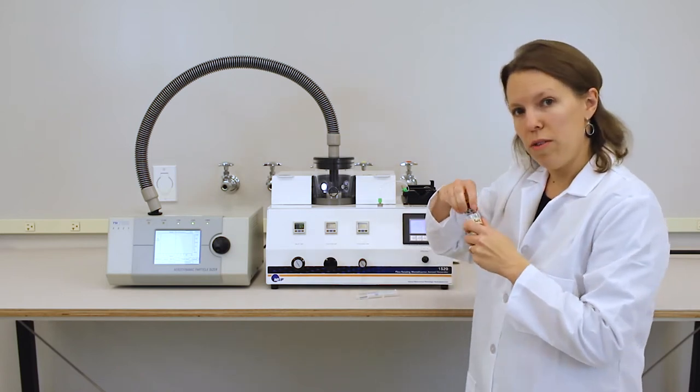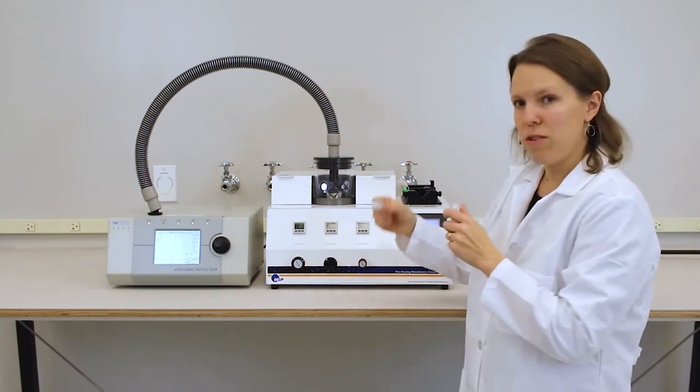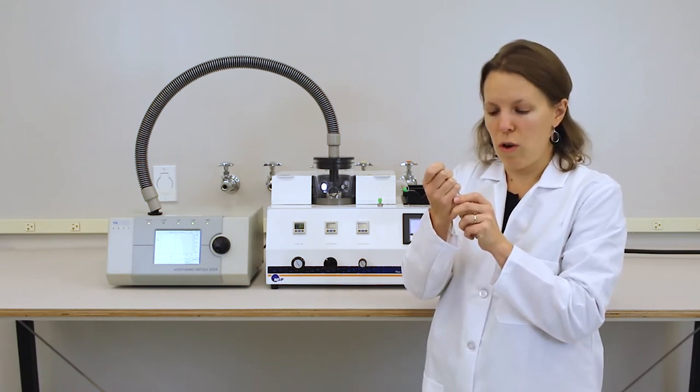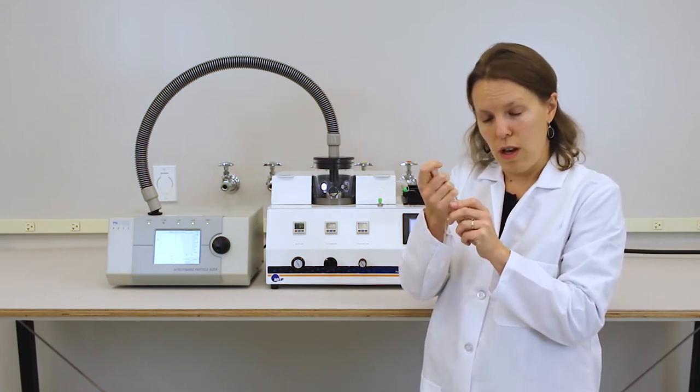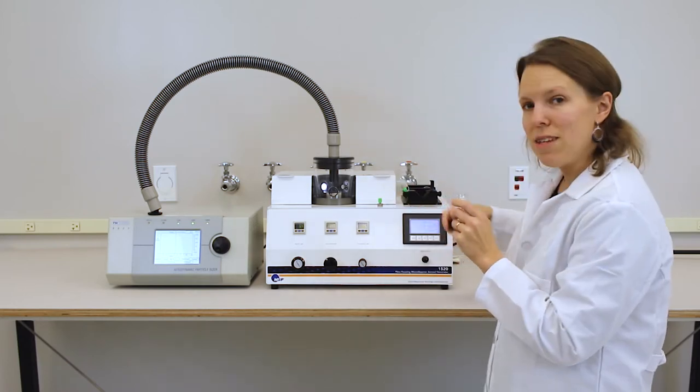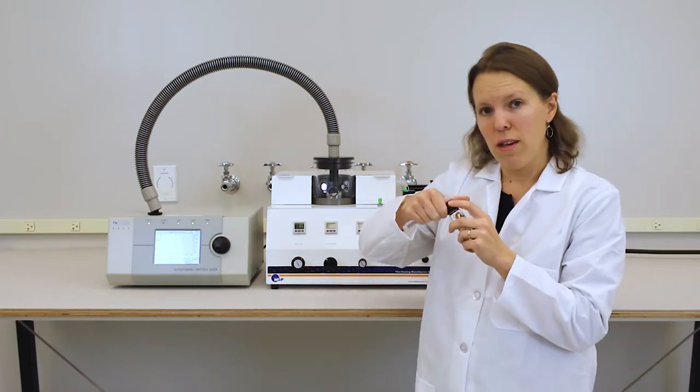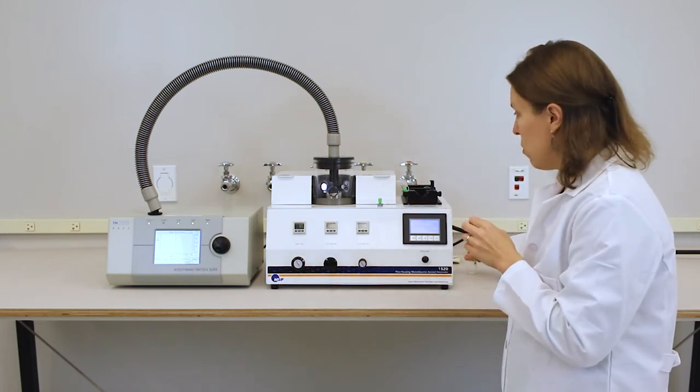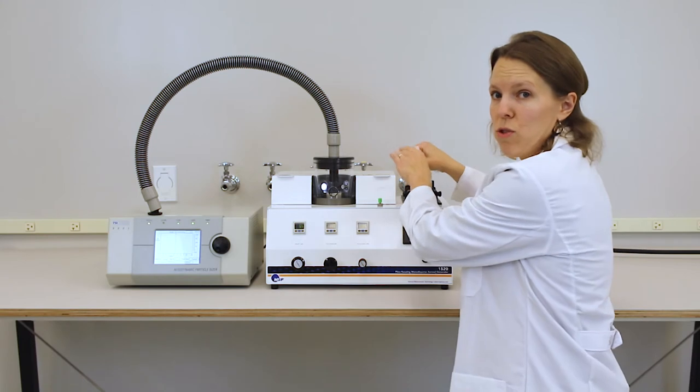First, I'll draw this prepared solution into the syringe. The solutions are prepared using a volume to volume ratio and that generally ranges from 0.1 to 10 parts per thousand. Several sizes of syringe come standard with the FMAG. You only need a few milliliters of solution.